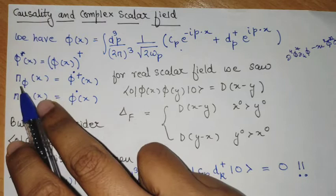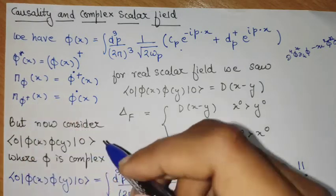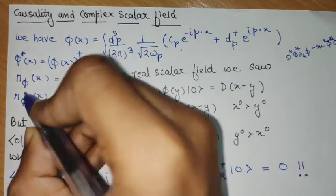And this was the conjugate momentum for the phi operator. And this is for the phi star operator or phi dagger operator, we can also call it phi dagger.